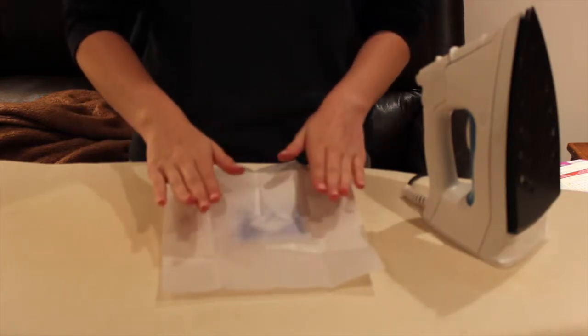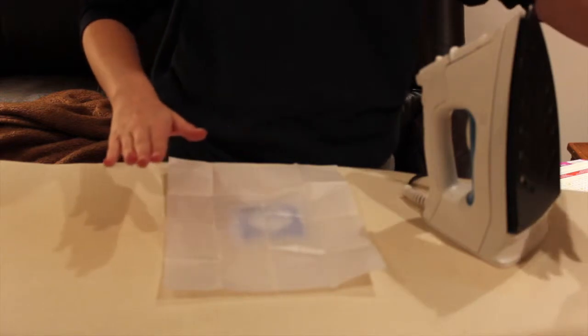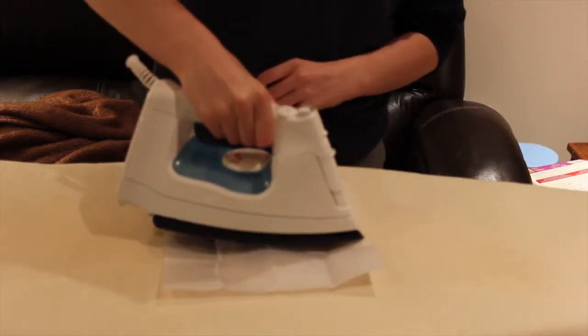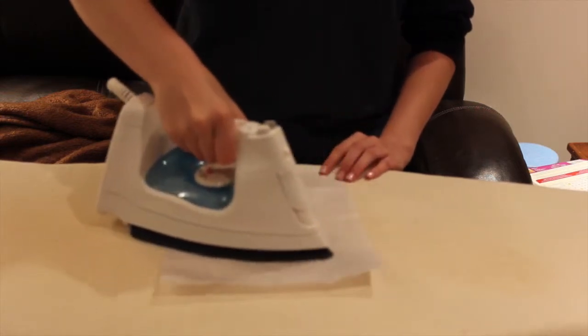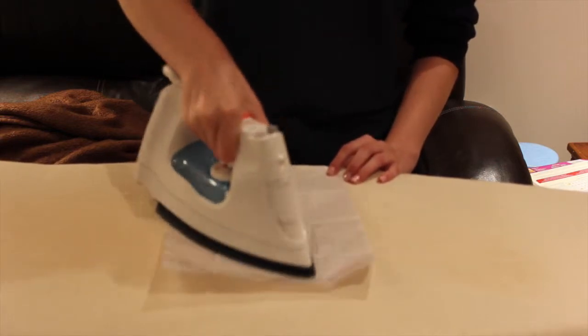What you do is put the paper over top of your design and wait until the iron is warm. And then you put the iron directly over the paper onto your beads, and just circle around like you were ironing some clothing.